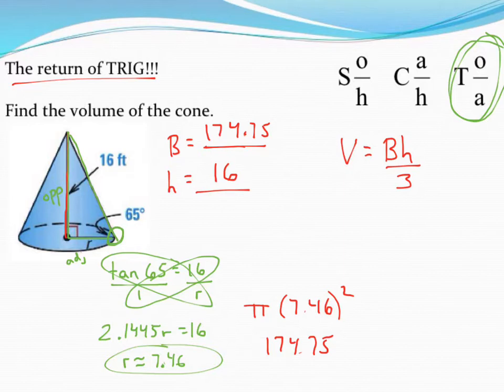Let's use a calculator to do the area of the base, 174.75, times the height, which was 16, that was given to me, and then divide by 3, because we're dealing with an object that comes to a point. We always have to divide by 3 for the volume. Reaching for a calculator and finishing that out, I get 932.